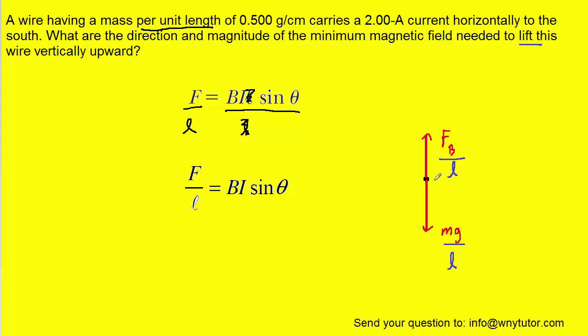Now, in order to lift the wire off the ground, these two forces would have to be equal in magnitude. So what we're going to do is set the magnetic force per unit length equal to the gravitational force per unit length.